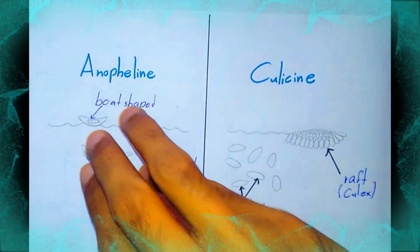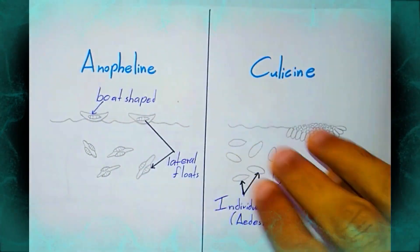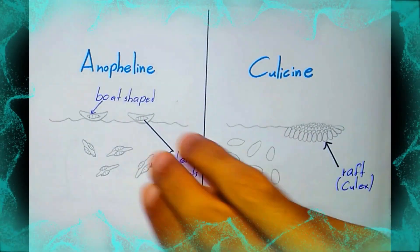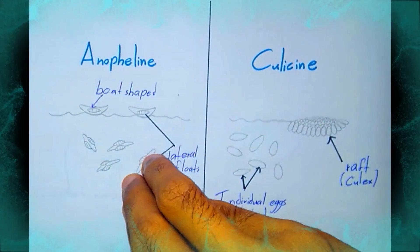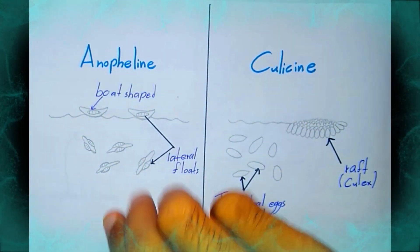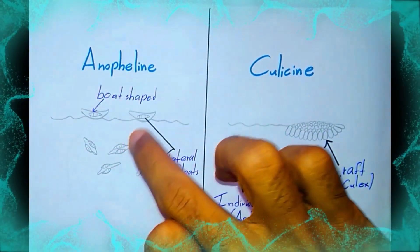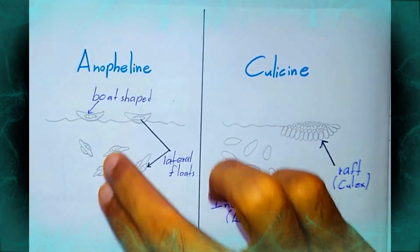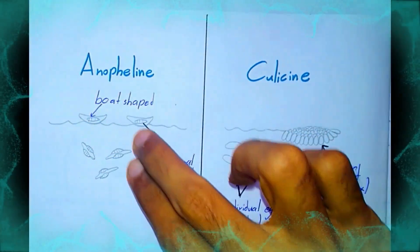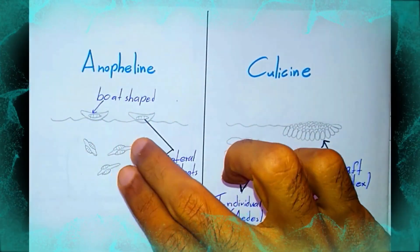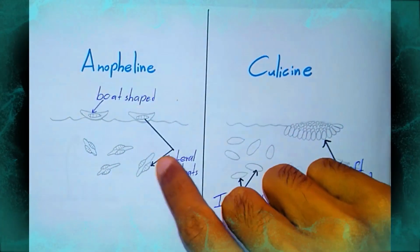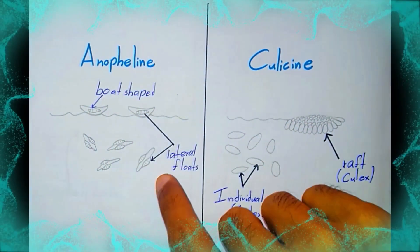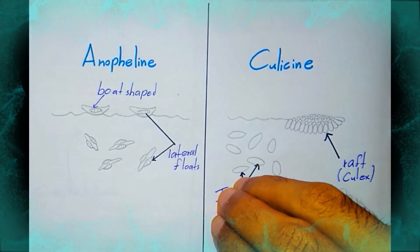This is anopheline and culicine mosquito eggs. In the anopheline mosquito, eggs are laid singly — you can see single eggs. They are boat-shaped with lateral floats and a keel.